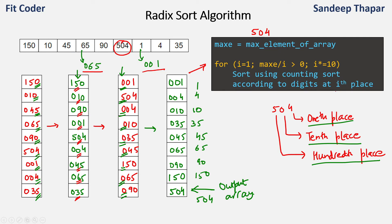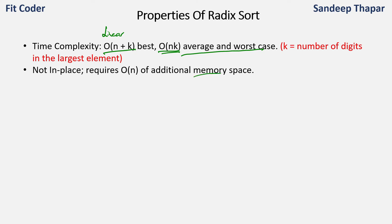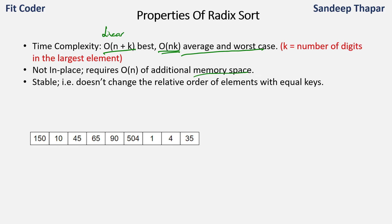Now let's look at the important properties of this algorithm. The time complexity in the best case is O(n+k), and in the average and worst case is O(nk), where k is the number of digits in the largest element. Because it uses Counting Sort as a subroutine, which has linear complexity, Radix Sort also has near-linear complexity when the number of digits is small. This is not an in-place algorithm — it requires O(n) additional memory space because Counting Sort itself requires additional memory. It is a stable algorithm, meaning it doesn't change the relative order of elements with equal keys.